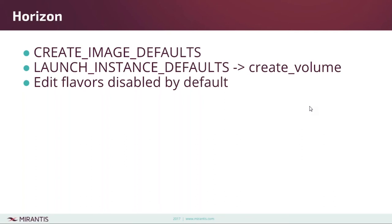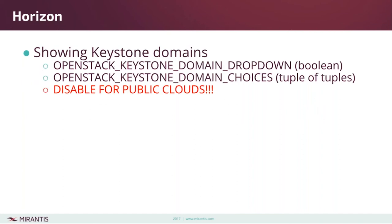Horizon has also made improvements to managing the launch process. You can set defaults for creating an image as well as setting the default decision on whether to create a volume when launching an instance. Also, as of Pike the ability to edit flavors using Horizon is disabled by default. You can re-enable it, but keep in mind that it's deprecated and will be removed in the R cycle.